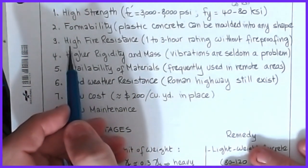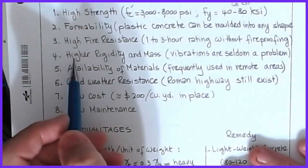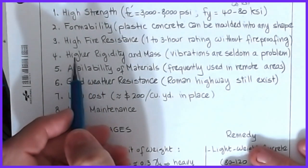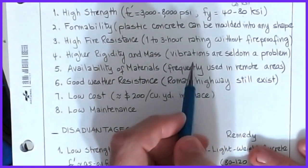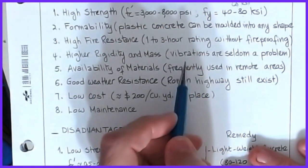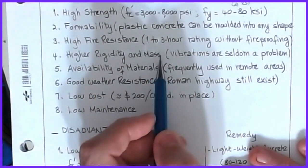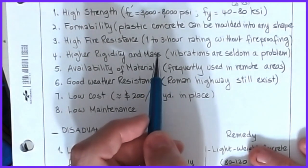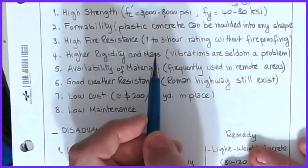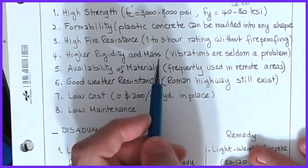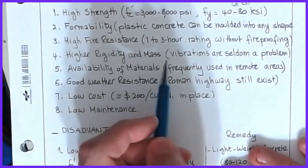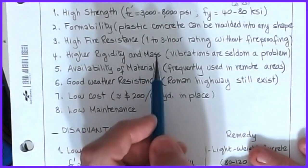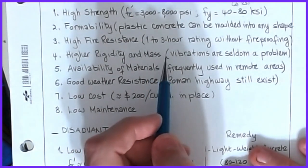Concrete also provides high rigidity and high mass, which helps with vibrations and seismic loads. In a lot of high seismic areas, the main resisting system is commonly some sort of structural shear wall system or structural moment frame, all made out of concrete. Steel structures just don't behave as well under vibrations.